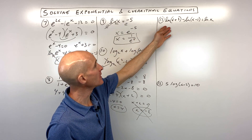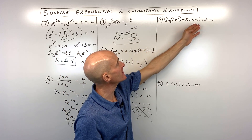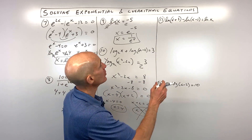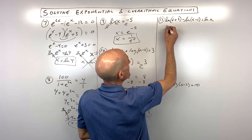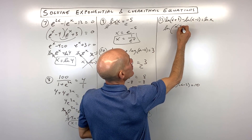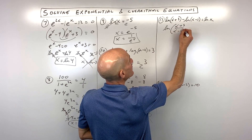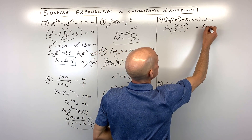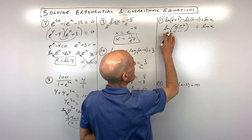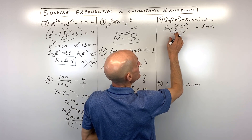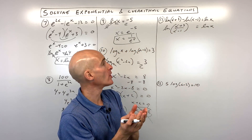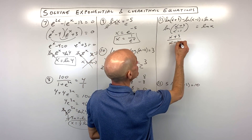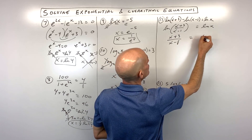Okay, a couple more examples. Number 11 is a little more challenging. I'm going to use condensing properties for logs. When you subtract logs, you divide the arguments — combining into one natural log equals natural log of x. Both sides are log base e, so we can use the one-to-one property of logs and set the arguments equal: x plus 3 over x minus 1 equals x.